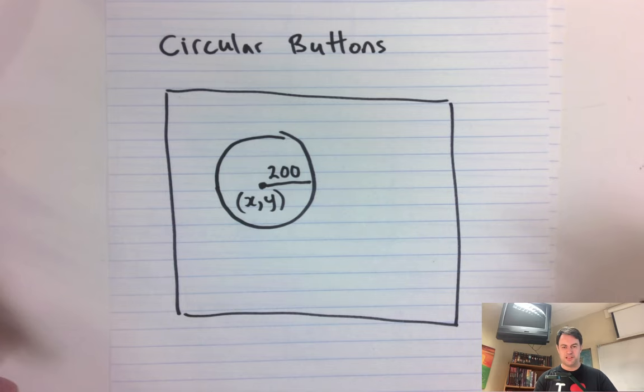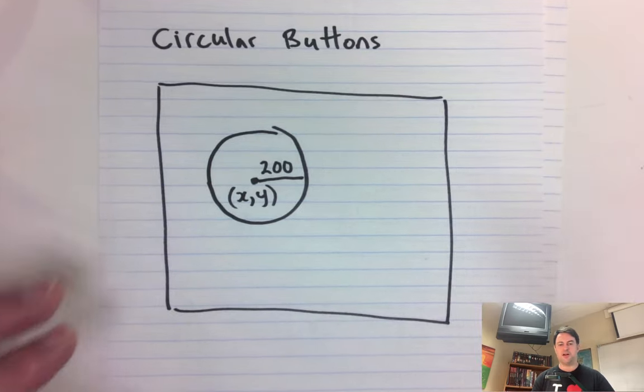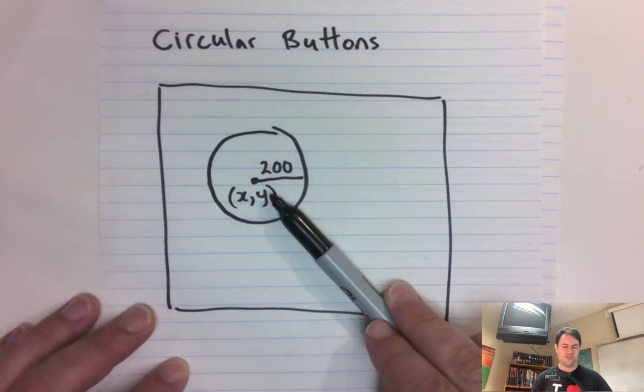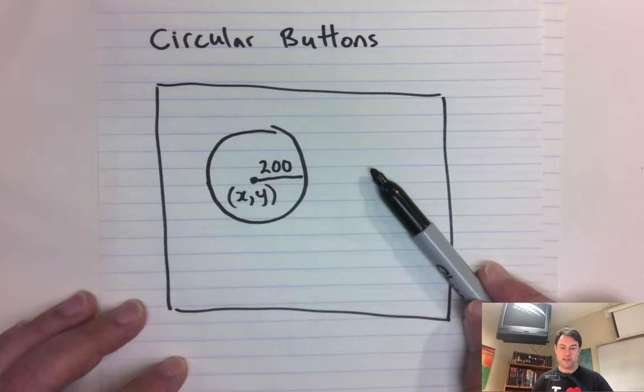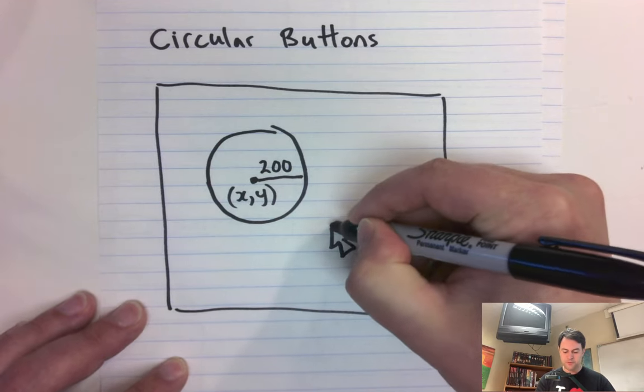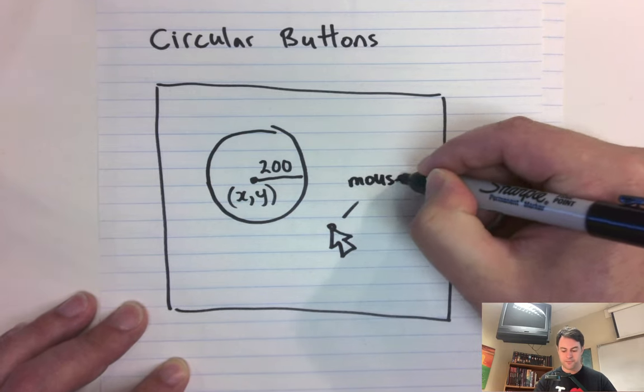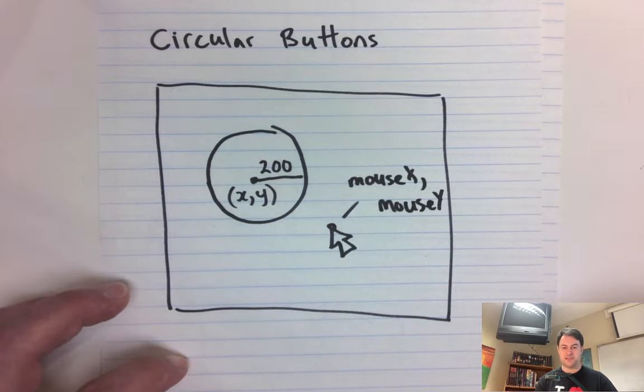So how is it that we can check to see if a mouse pointer, like if this pen was the mouse pointer, how is it that we are going to see with math alone whether or not the pointer is inside of the circle? So obviously a human can just use their eyes and be like, yeah, it's inside. But a computer has no eyes, it only has math to work with. So what kind of math can we do? So let's say this is a mouse pointer here. We know that this point is given to us by mouse x and mouse y. At least that's how processing can see it.